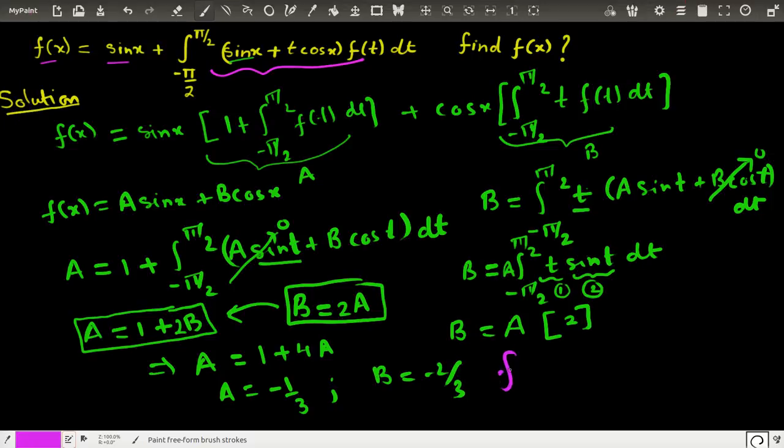Therefore the answer for this question would be that my function f(x) is minus 1/3 into sin(x) plus we have 2/3 into cos(x).